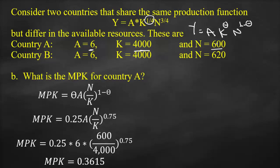One way is to use the formula, whether in Excel or in an exam. The other way is to write the production function with numbers and get the first derivative. Our production function with numbers is Y = 6 × K^0.25 × N^0.75.